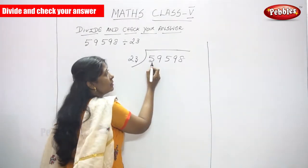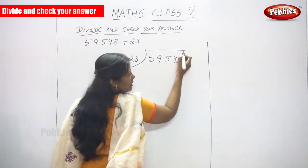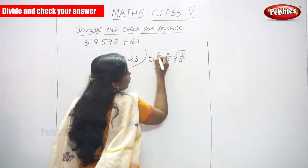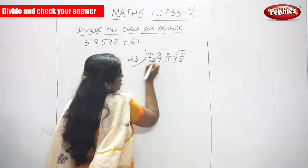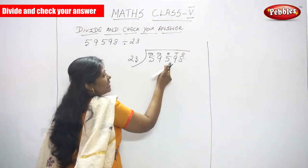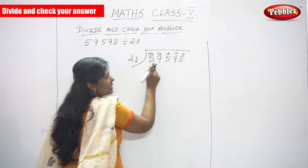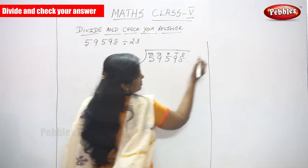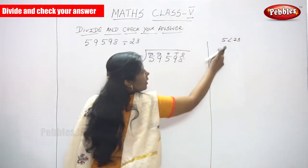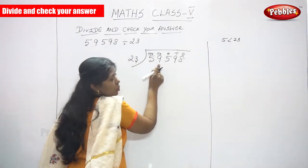First, you have to see the first digit. What is the number? Before you are going to divide or multiply, first you have to write the place value: ones, tens, hundreds, thousands, then ten thousands. So, 59,598 is divided by 23. The first digit you have to see is 5. What is the number? 5. Compare 5 with 23 — 5 is less than 23, so you can't divide by this number. So, go to the next digit.